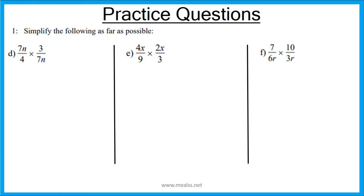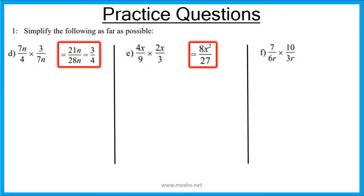Here are some practice questions. Pause the video, have a go, and press play again when you are ready for the answers. For 1d you should have got 21n over 28n, which simplifies to 3 over 4. For e you should have got 8x squared over 27, and for f you should have got 35 over 9r squared.